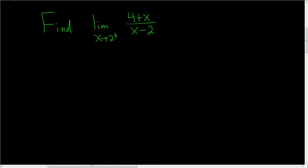We're being asked to find the limit as x approaches 2 from the right of this rational function. If you plug in 2, you get something that's undefined because it's being divided by 0.